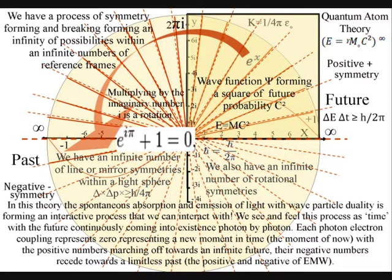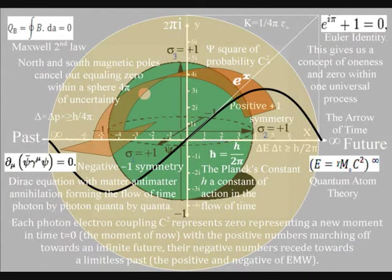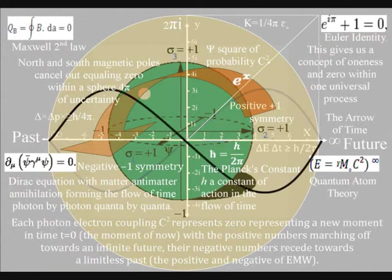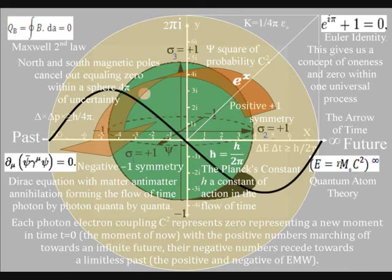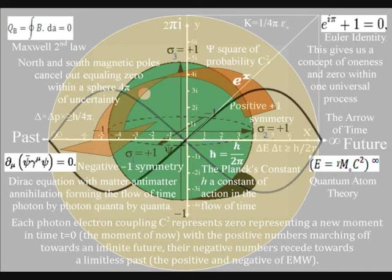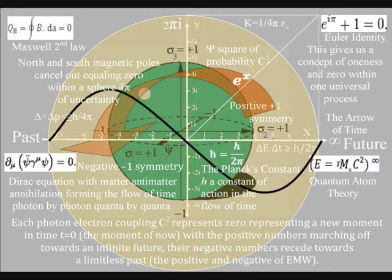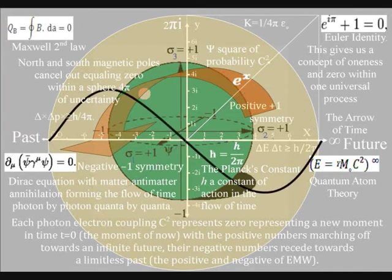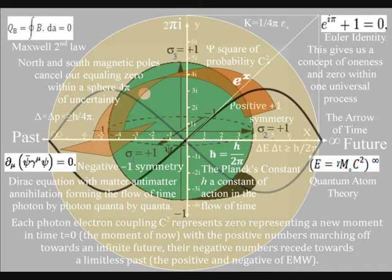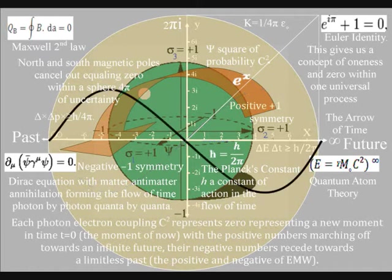This diagram shows a complex plane with positive and negative numbers and imaginary numbers going off at right angles, with zero in the center. This still represents the geometry of a physical process. The zero represents zero time, or t equals zero — the moment of now — formed by light interacting with matter, with the positive numbers marching off forming a potential future with a square of probability, and the negative numbers receding towards a limitless past, representing the positive and negative of electromagnetic waves.